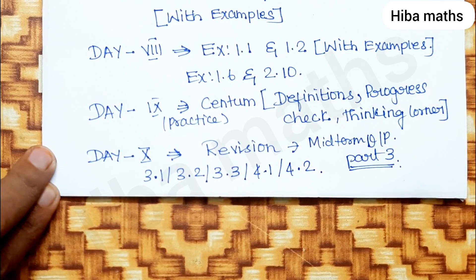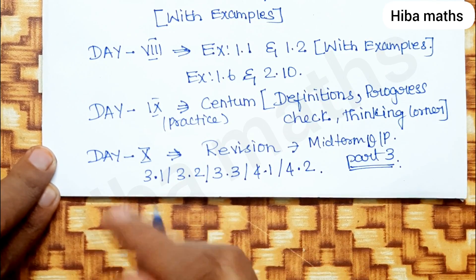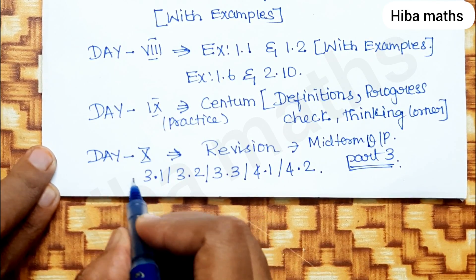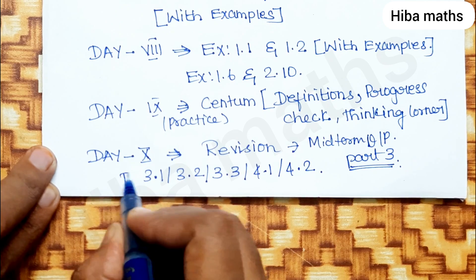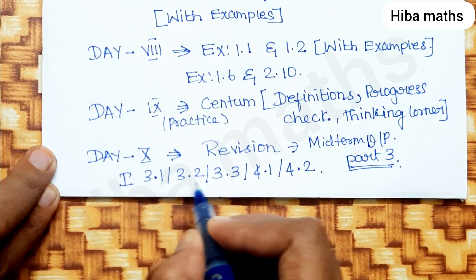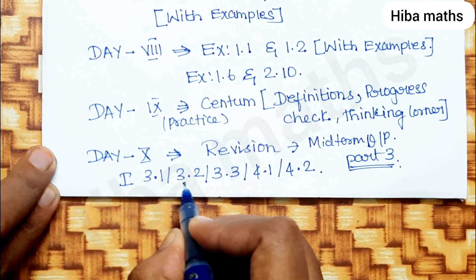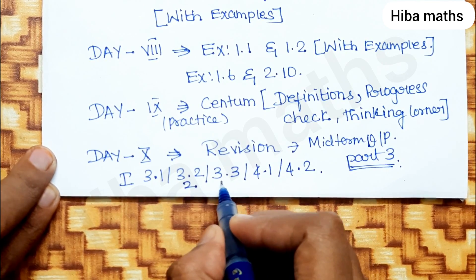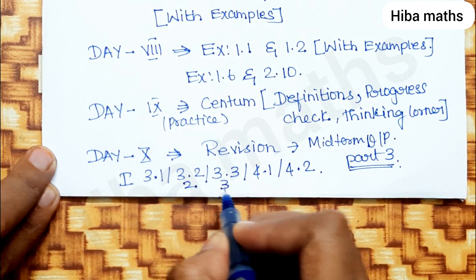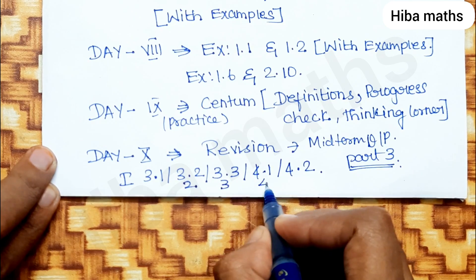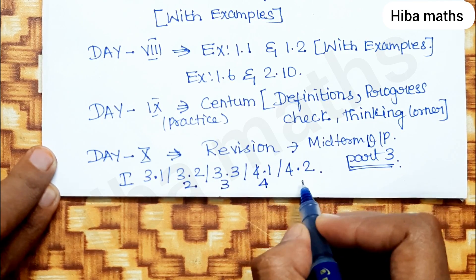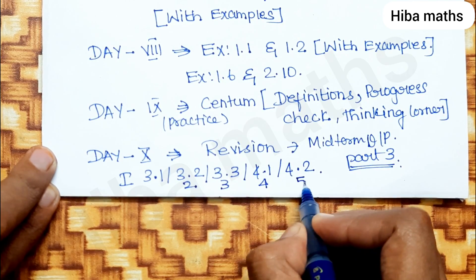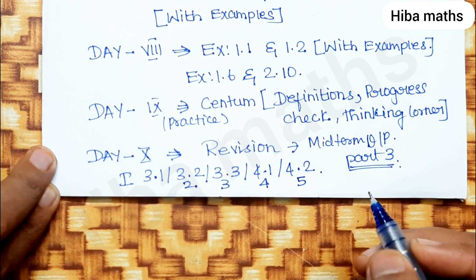For chapters 3 and 4: Day 1 covers 3.1, Day 2 covers 3.2, Day 3 covers 3.3, Day 4 covers 4.1, and Day 5 covers 4.2.